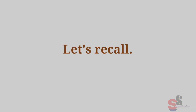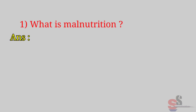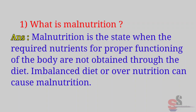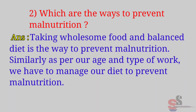Questions from textbook — Let's Recall, Textbook page 26. First: What is malnutrition? Answer: Malnutrition is the state when the required nutrients for proper functioning of the body are not obtained through the diet. Imbalanced diet or overnutrition can cause malnutrition. Second: Which are the ways to prevent malnutrition? Answer: Taking wholesome food and a balanced diet is the way to prevent malnutrition. As per our age and type of work, we have to manage our diet.